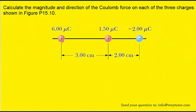In order to calculate the Coulomb force that's acting on each of the three charges, it's going to be helpful to give an arbitrary label to the three charges. For example, we can call the 6 µC charge A, the 1.5 µC charge B, and the negative 2 µC charge C.